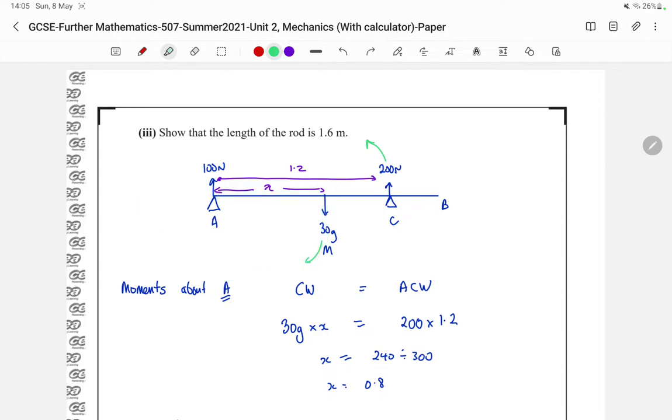The anticlockwise forces, well I have 200 newtons acting at a distance of 1.2 meters around A. And that's acting in an anticlockwise direction. So our clockwise moment of 30g times distance X must be equal to our 200 newtons times distance 1.2.